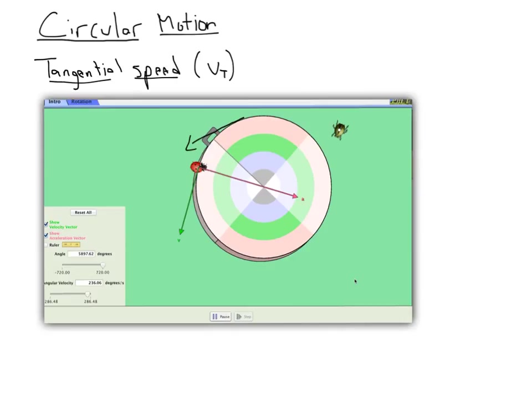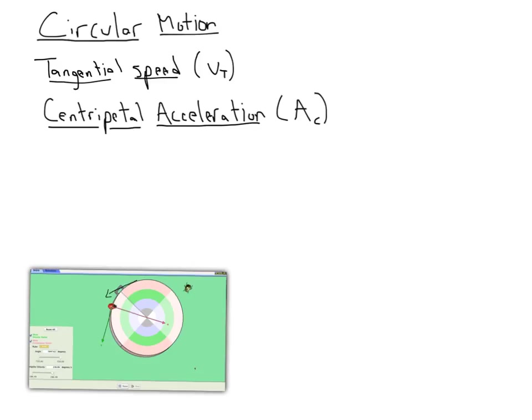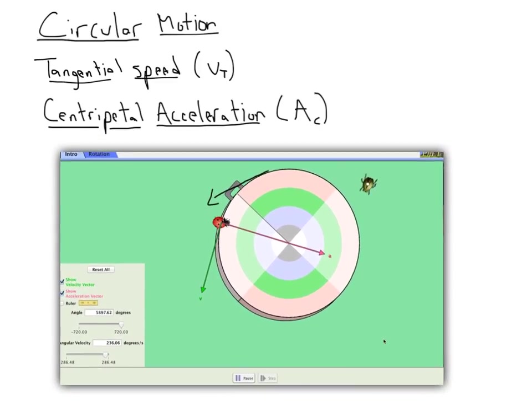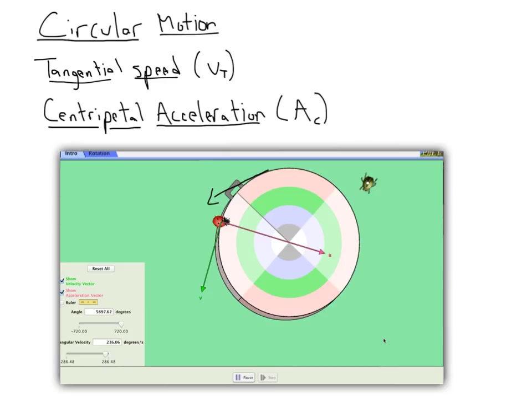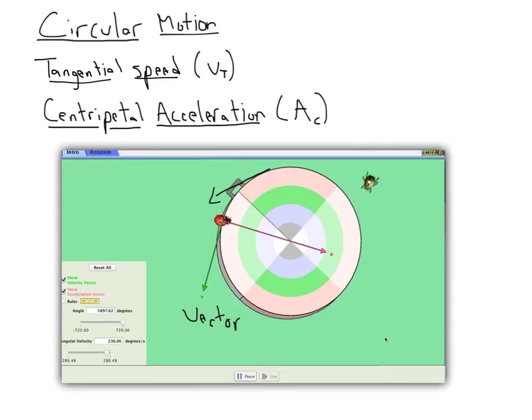Now, as we look at the ladybug again, we see a second vector, and it's labeled A. And this is going to be our second term. And the term is pronounced centripetal acceleration. So centripetal acceleration is the acceleration due to a change in direction of the velocity of an object going around the circle. If you remember, velocity is a vector. So it has both magnitude and direction. Well, the magnitude of this doesn't change as the ladybug goes around the circle. We see that the magnitude stays the same. But we're changing the direction constantly, and so we need an acceleration, and that's called the centripetal acceleration.